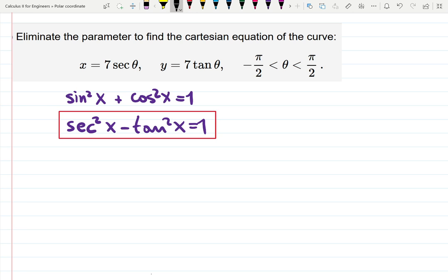So to use it, I would like to find secant and tangent, square each, and then use the identity here to figure out what's going to happen. If x equals 7 secant theta, then secant theta is x over 7. I just divided by 7. Divided by 7.